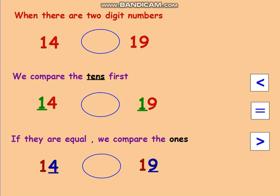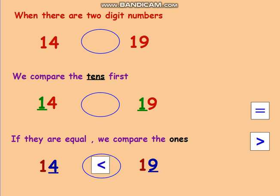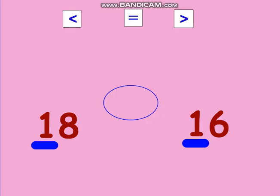Which is greater — nine or four? Of course number nine. So we will use the greater than sign. This sign means that 19 is greater than 14.